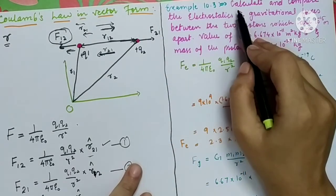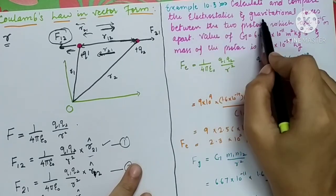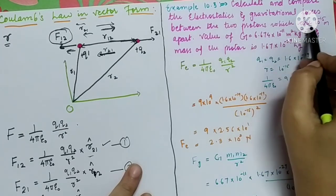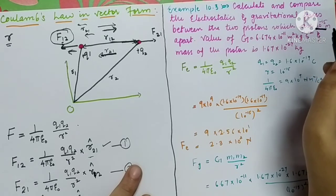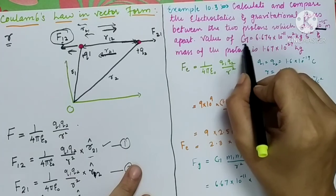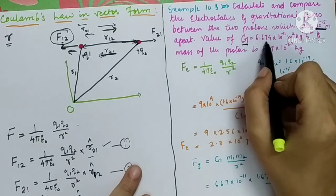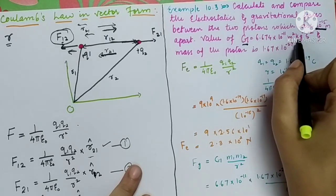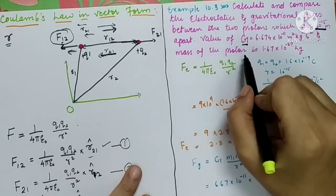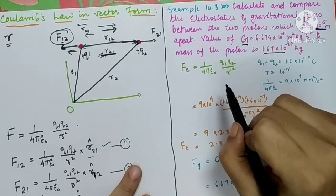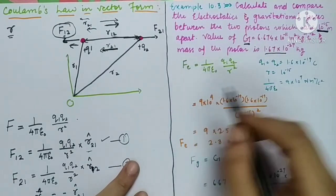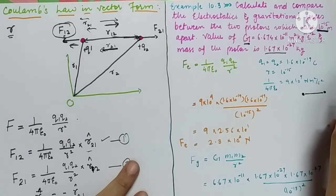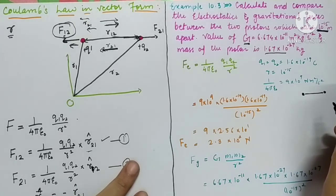Now let us solve Example 10.3: Calculate and compare the electrostatic and gravitational forces between two protons that are 10⁻¹⁵ meters apart. The gravitational constant G = 6.674 × 10⁻¹¹ m²/kg²·s², and the mass of a proton is 1.67 × 10⁻²⁷ kg. The charge on a proton equals the charge on an electron: 1.6 × 10⁻¹⁹ coulomb.